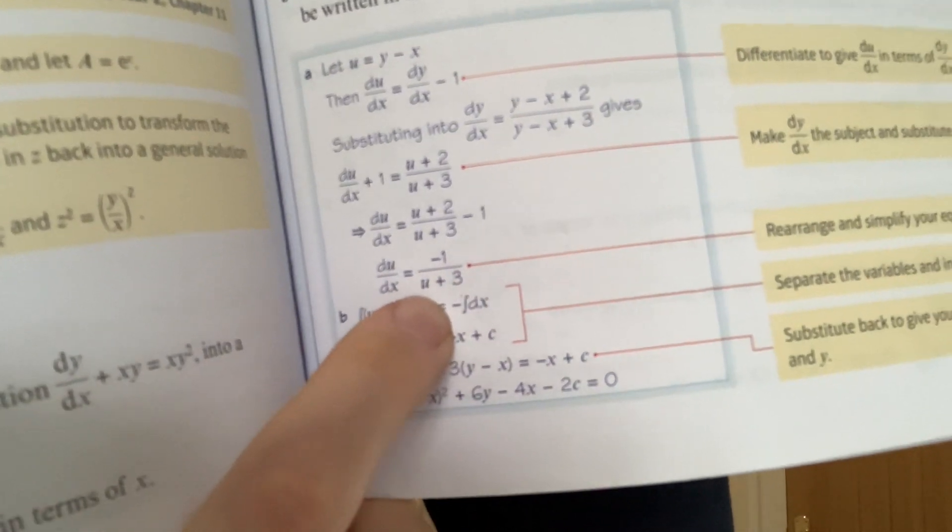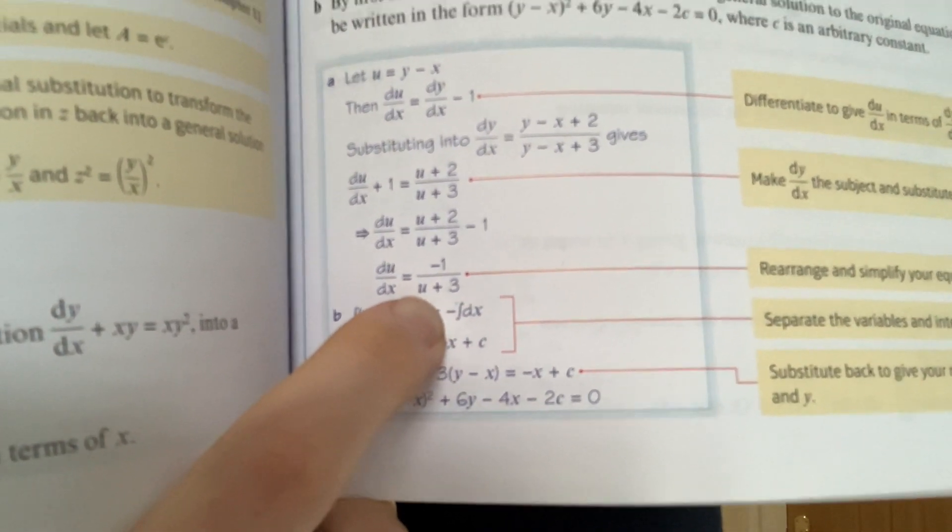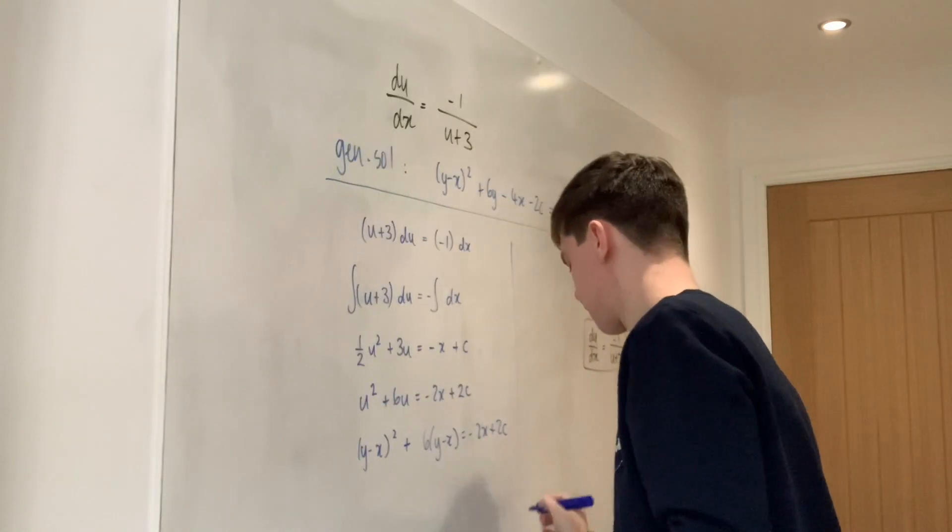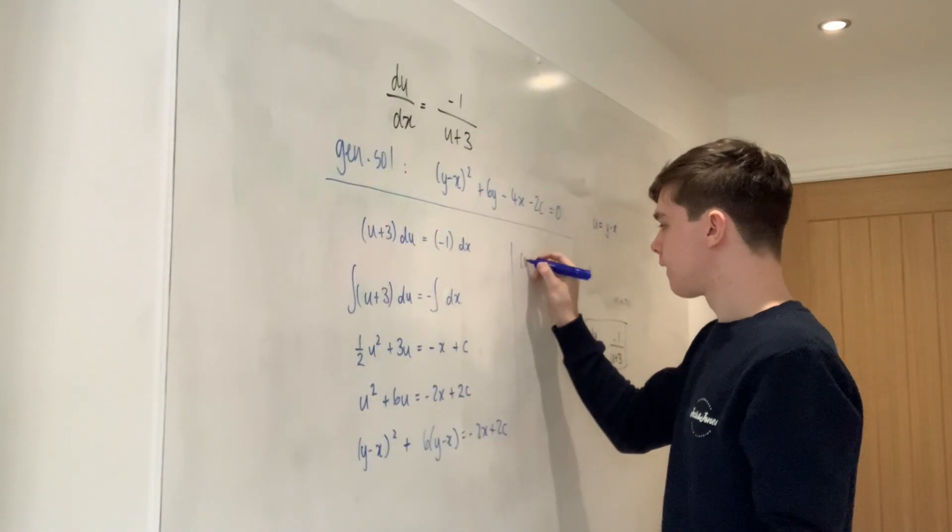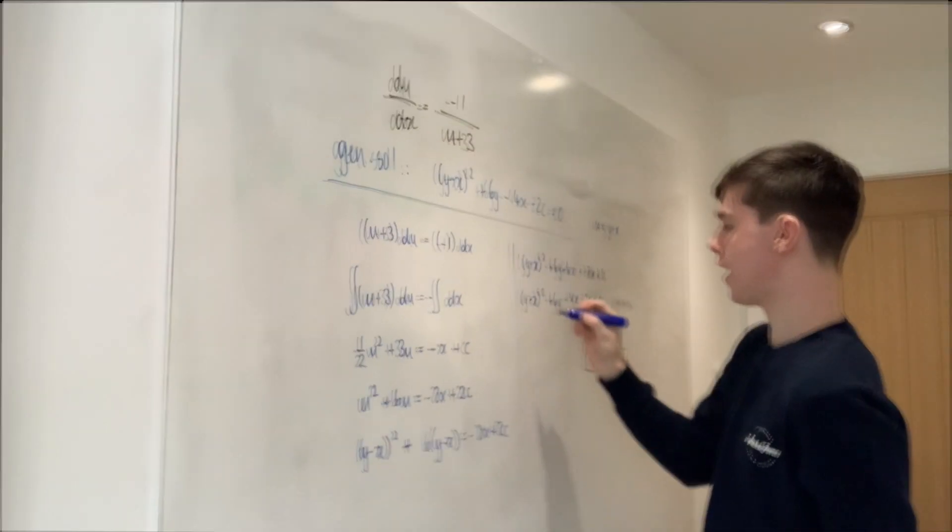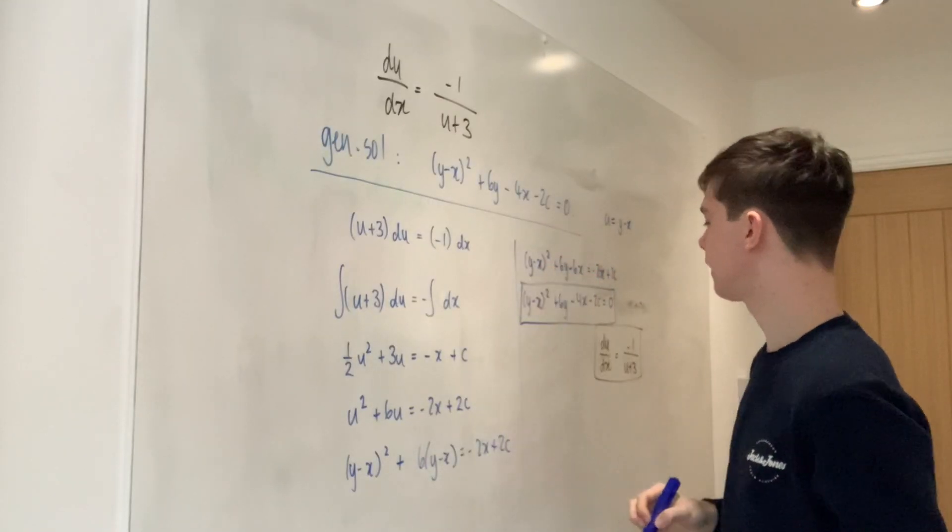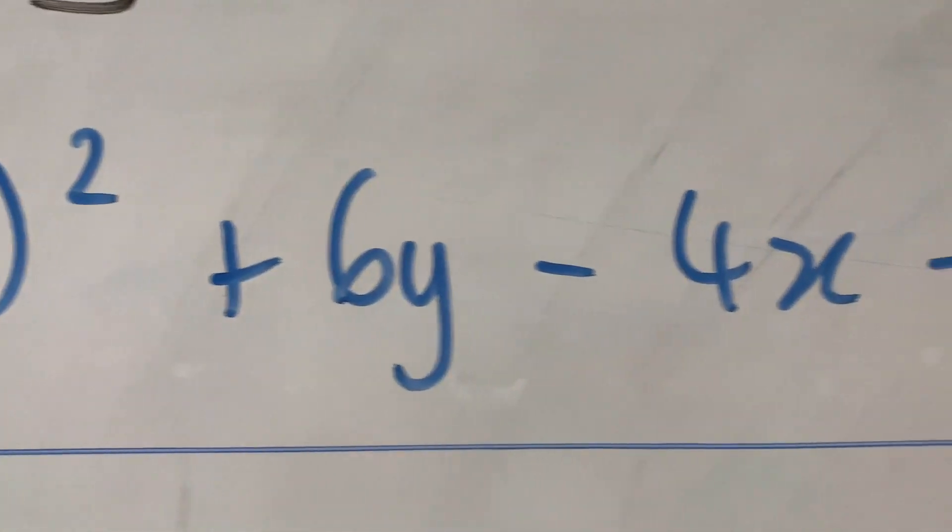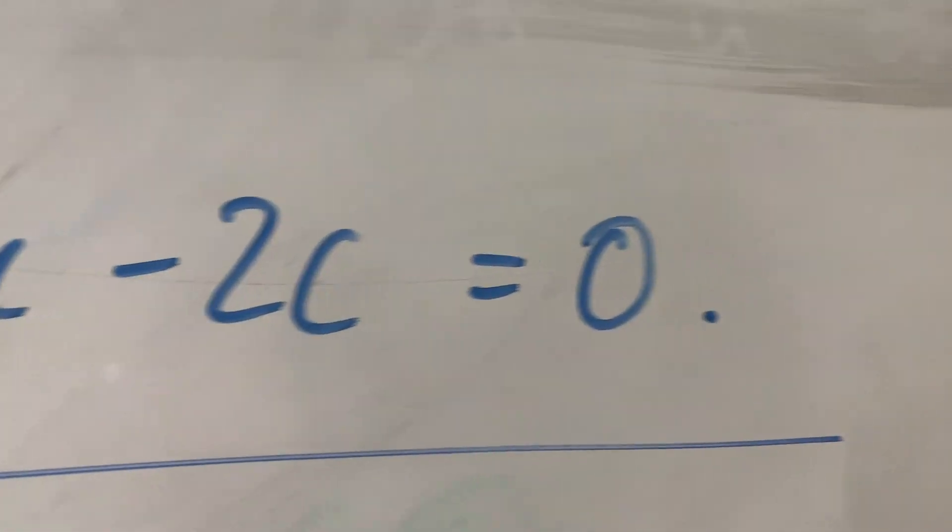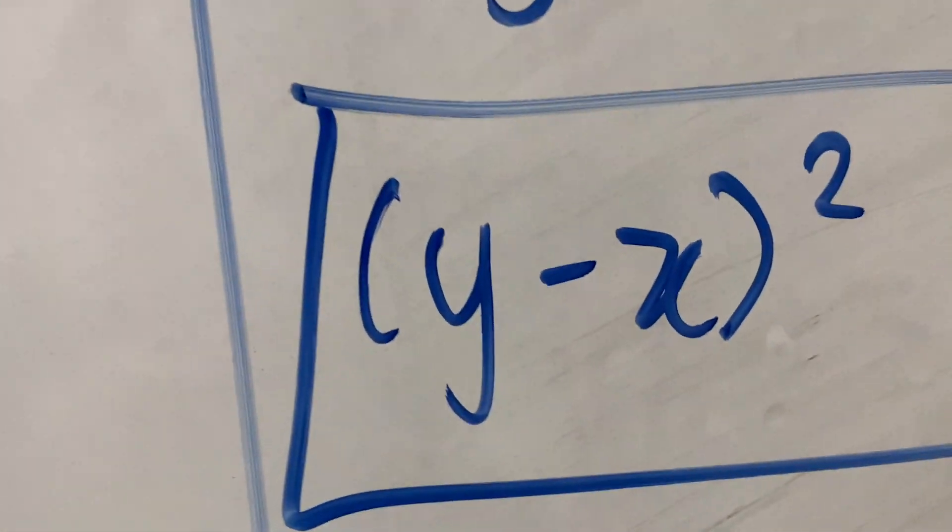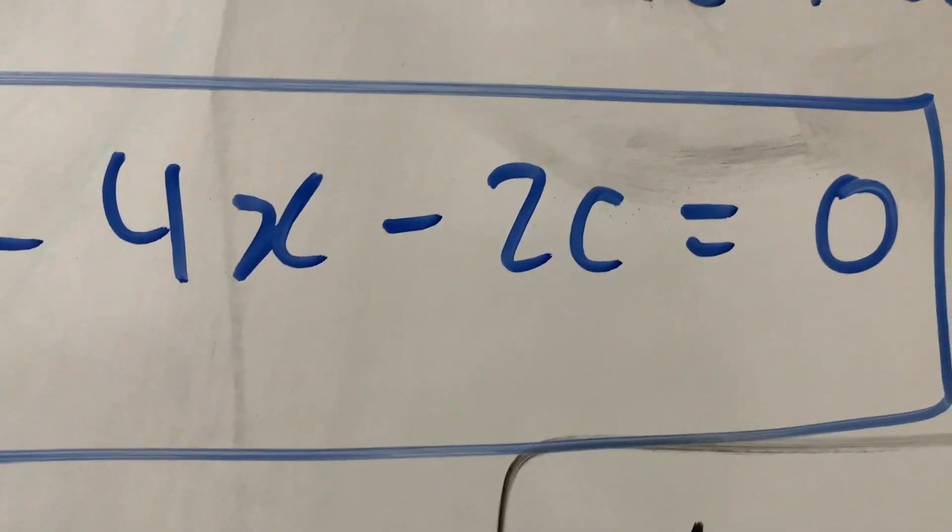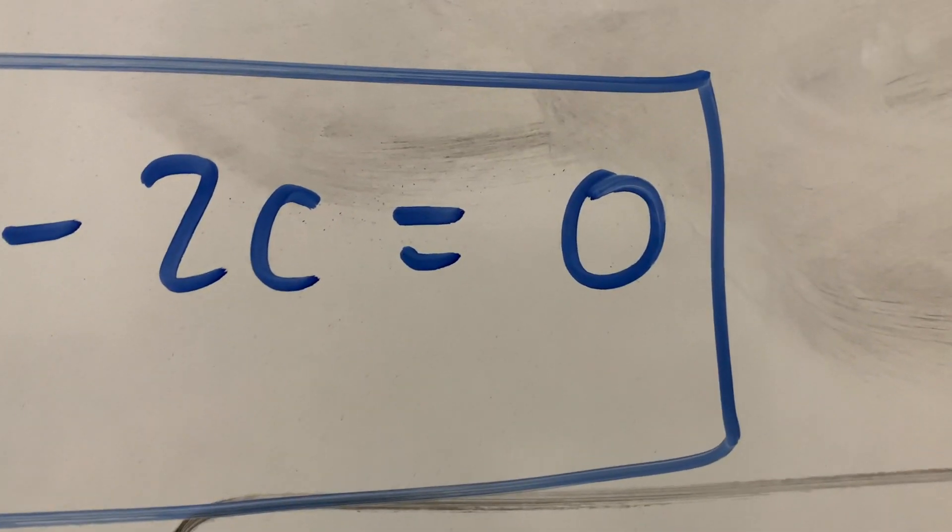Minus one over u plus three is my answer. And their answer is also minus one over u plus three. Wow. Oh, yes. Look at that. The general solution that we were asked to find. Y minus x all squared plus 6y minus 4x minus 2c equals 0. There's my final answer. Y minus x all squared plus 6y minus 4x minus 2c equals 0. Perfect.